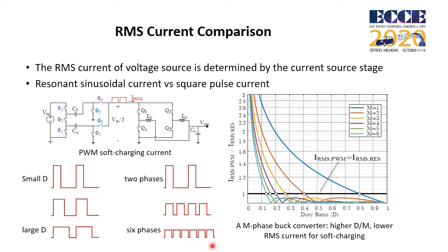We compare the RMS current of resonant and PWM soft-charging. This is the boundary when the RMS currents are equal. For an M-phase buck converter, a higher phase number and higher duty ratio result in lower RMS current, and the conduction loss is also lower.